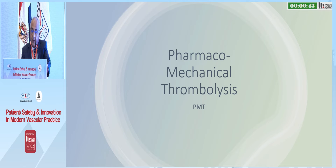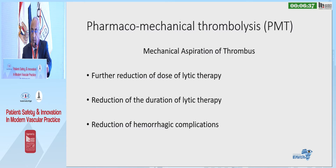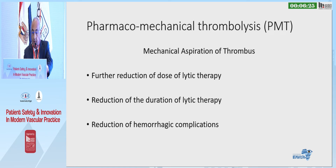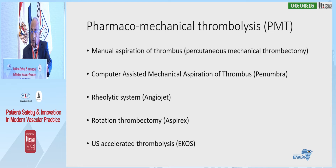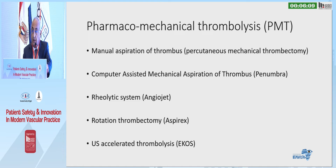Pharmacomechanical thrombolysis uses a mechanical method in addition to, or without, a thrombolytic agent. It came with the premise of further reduction of the dose and duration of lytic therapy, and reduction of hemorrhagic complications. Methods include percutaneous manual aspiration, computer-assisted mechanical aspiration (the Penumbra device), the rheolytic system (AngioJet), rotational thrombectomy (Aspirex), and ultrasound-accelerated thrombolysis — the most commonly performed methods.